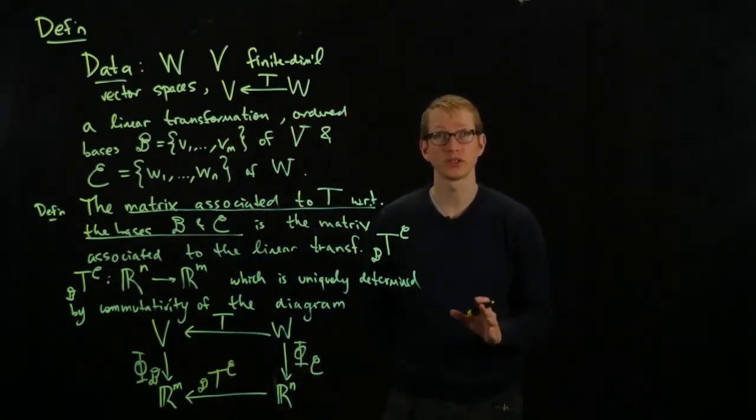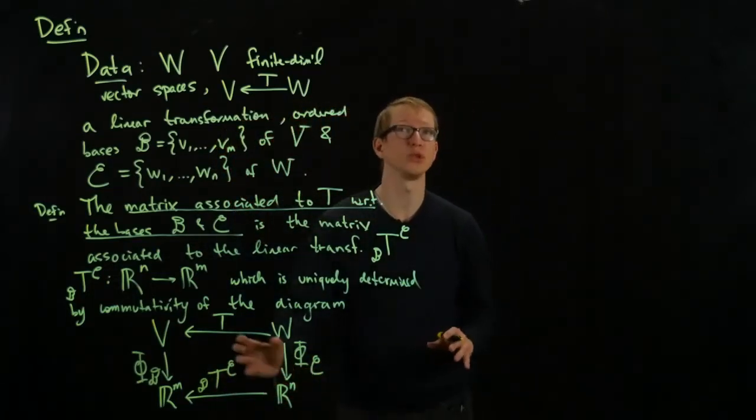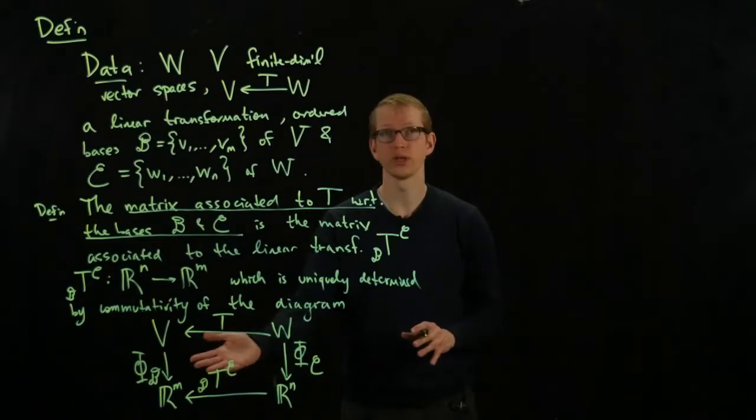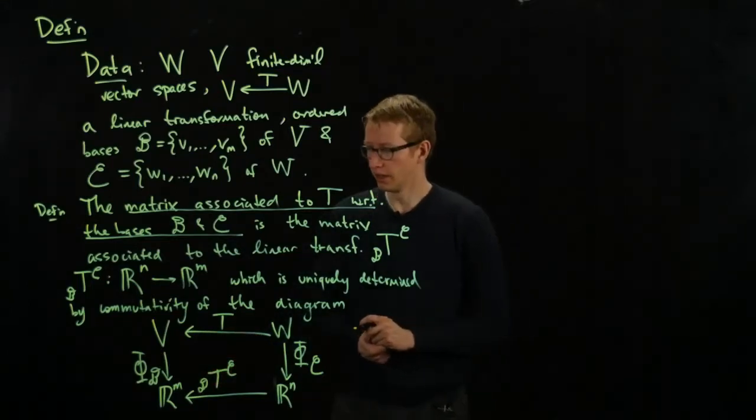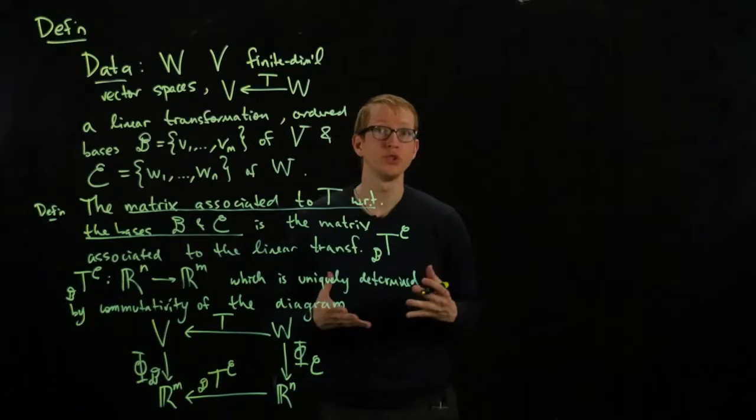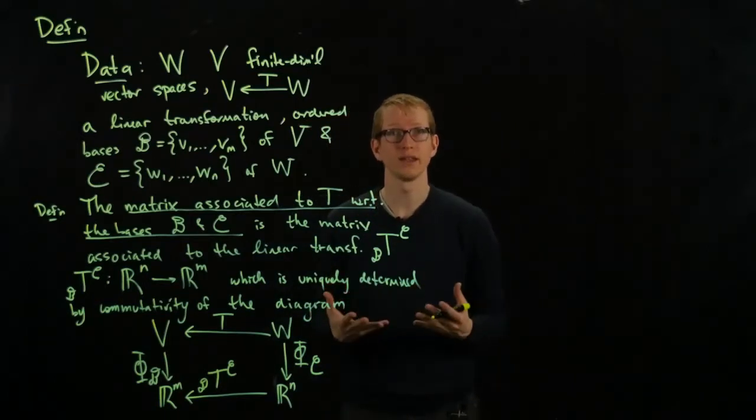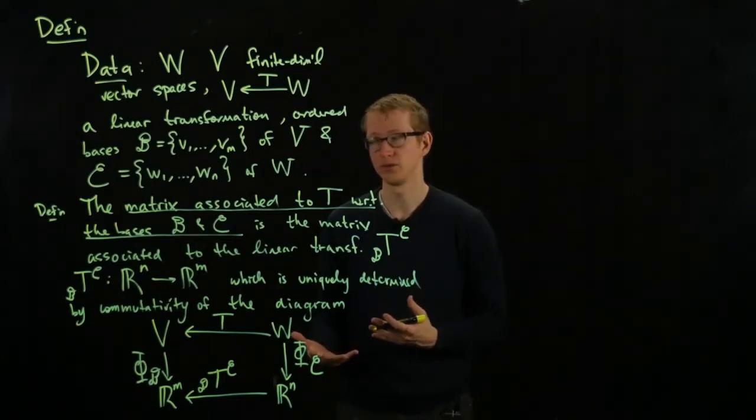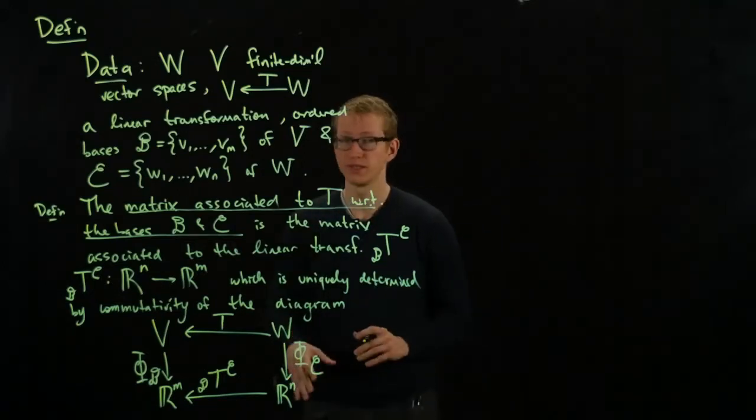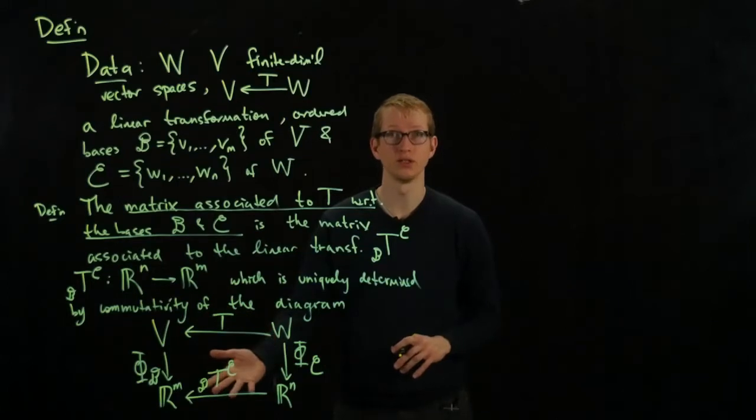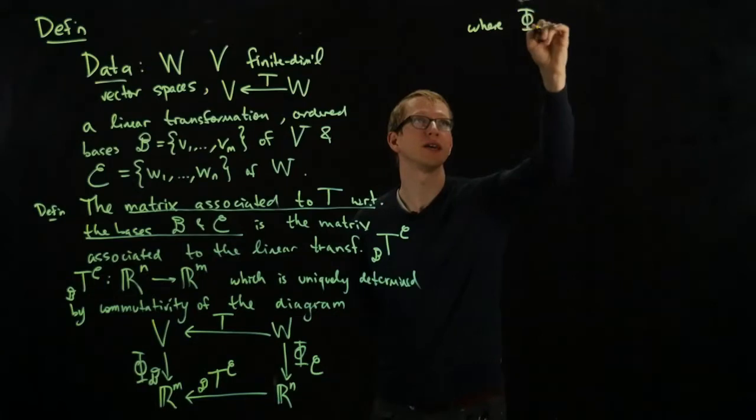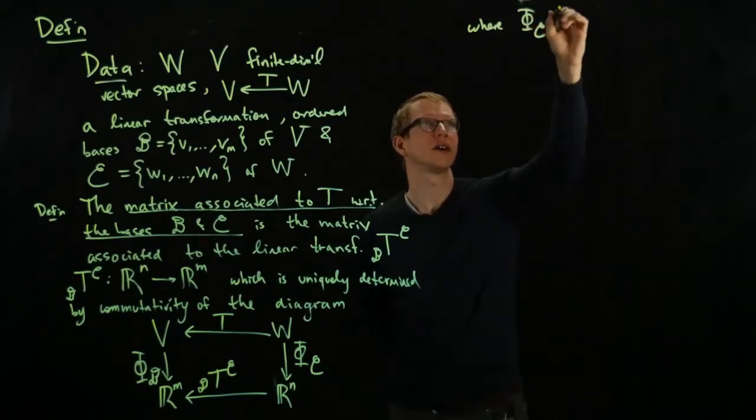And we know what the matrix is associated to any linear transformation between Euclidean spaces is. There we have a canonical basis, a canonical ordered basis, and we can write our matrix with respect to that one. So that's what we do whenever we write a matrix associated to two different bases on two different vector spaces. We are secretly performing this procedure.